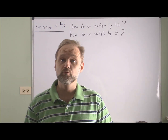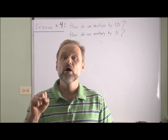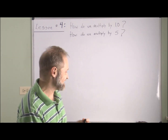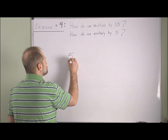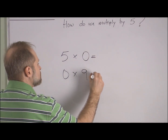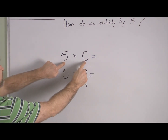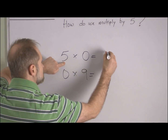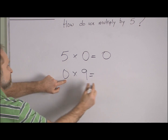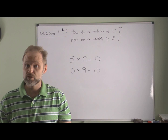Last time in lesson number three, we focused on two main things: multiplication by zero and multiplication by two. Let's take a moment and review. With multiplication by zero, if either of these numbers is zero, then our final answer will be zero. So five times zero is zero. Multiplication by zero is very easy to do.